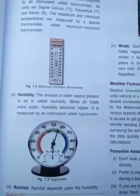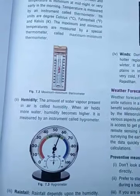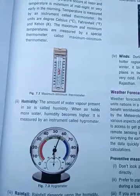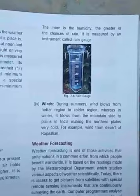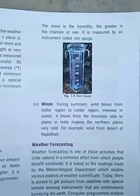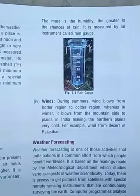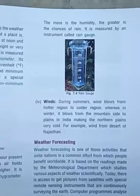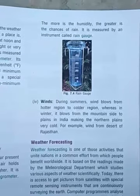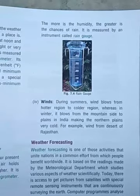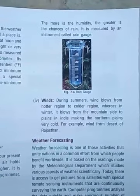Rainfall depends upon humidity. The more humidity there is, the greater the chance of rain. Rainfall is measured by an instrument called a rain gauge, which measures the flow and chart of rainfall.